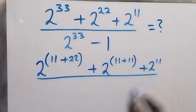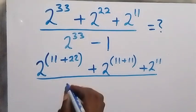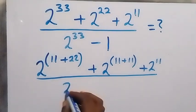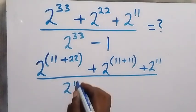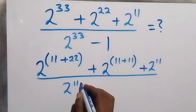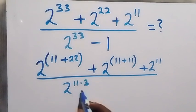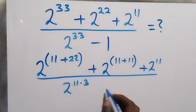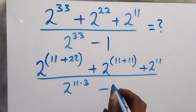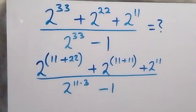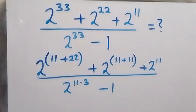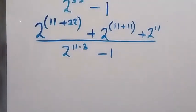From the denominator, we can write that as 2 raised to power 11 multiplied by 3. So 11 times 3 — that will give us 2 raised to power 33, then minus 1. In the next step, we apply the laws of indices.